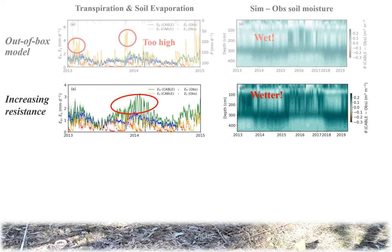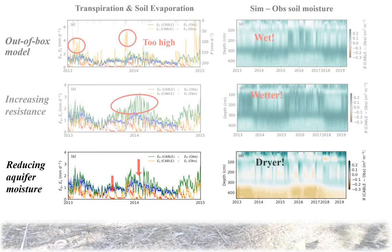To fix this model, we first reduced soil evaporation by increasing the resistance, but this only worsened the transpiration and soil moisture. We then reduced water storage in groundwater aquifers. A drier aquifer successfully removed most of the positive bias in transpiration, as shown in the left plot, and also reduced the wet bias in the right plot.